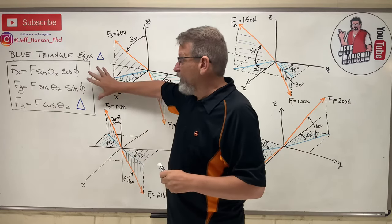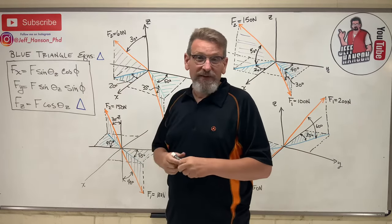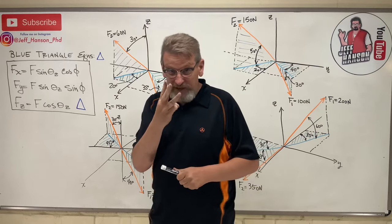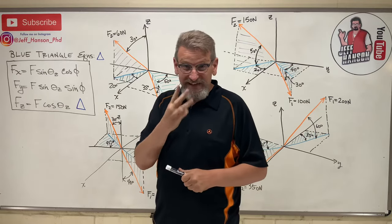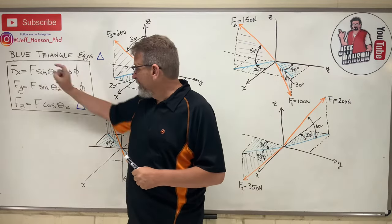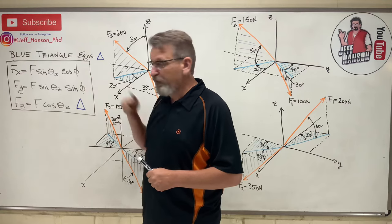In the last video, we derived these blue triangle equations, and in these equations there are three unknowns — the three things that we need to know. We need to know f, theta_z, and we need to know phi.